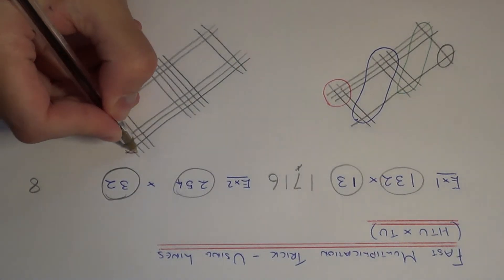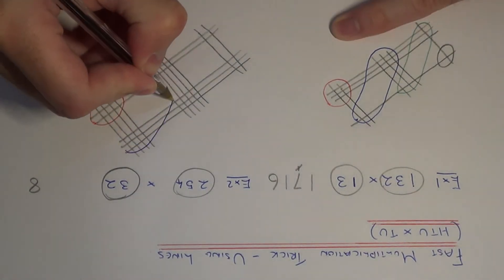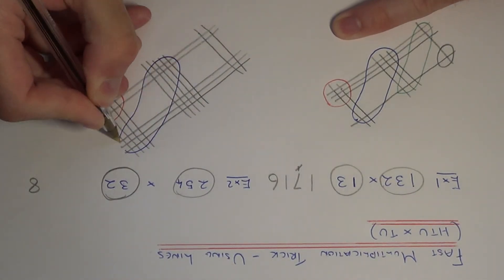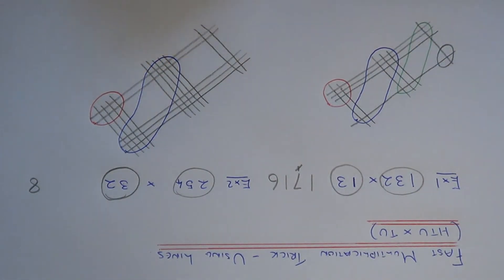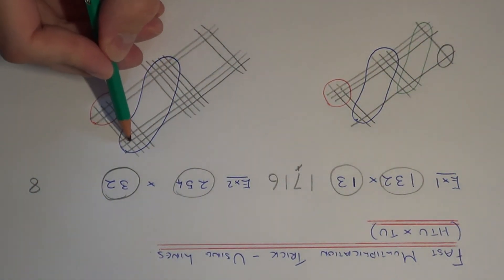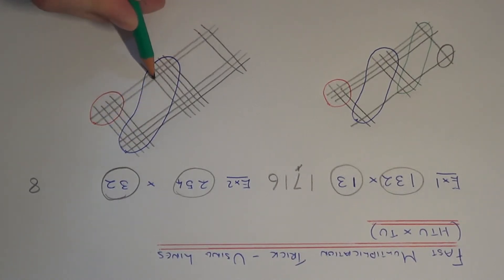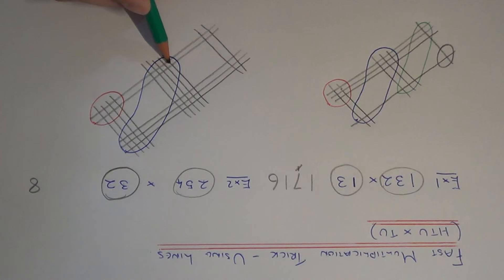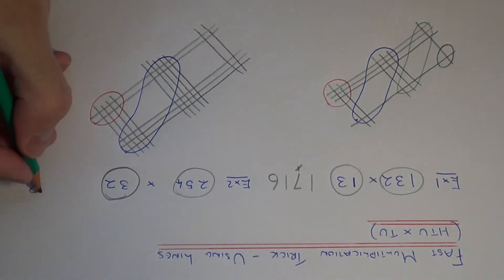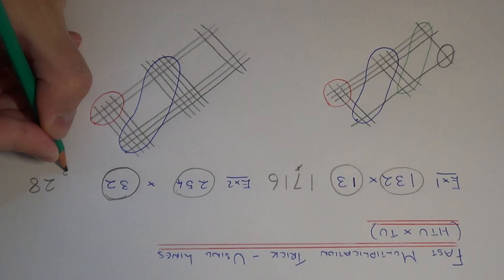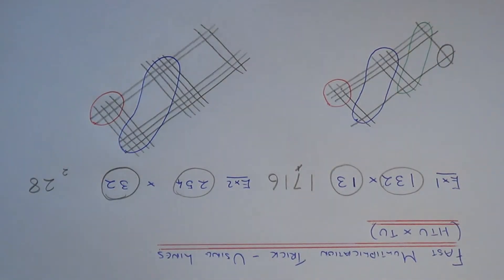Let's count the intersections that we have in this section. So we have one, two, three, four, five, six, seven, eight, nine, ten, eleven, twelve, thirteen, fourteen, fifteen, sixteen, seventeen, eighteen, nineteen, twenty, twenty-two. So we put the two here and carry the two into the next column.